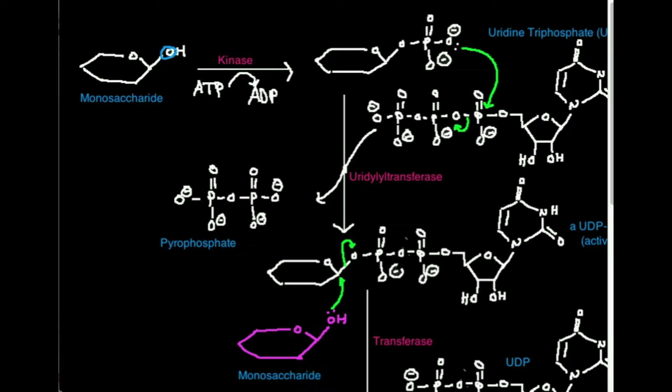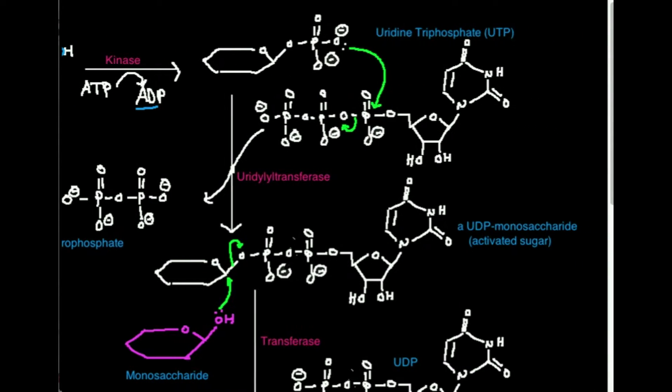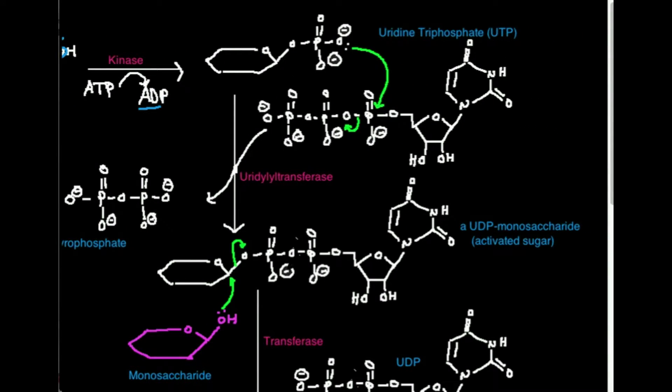You could effectively think of it as we're replacing the hydrogen on it with a phosphate. And that phosphate comes from the ATP molecule as shown here in the reaction. That's catalyzed by a kinase. That's the kind of enzyme that does this. So a kinase is literally going to phosphorylate this monosaccharide at this position right here. And so we get a phosphorylated monosaccharide. And in the process of transferring the phosphate from ATP, we get adenosine diphosphate.